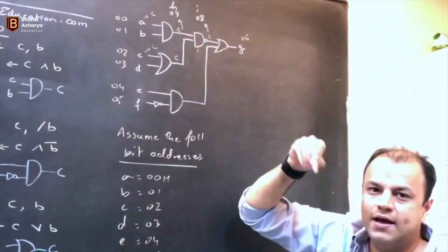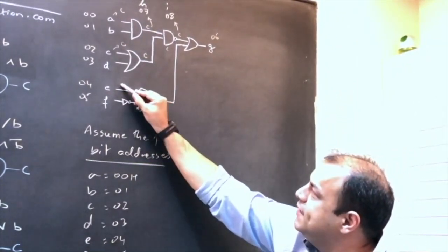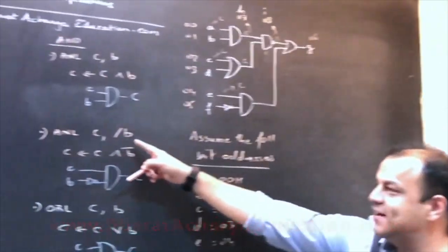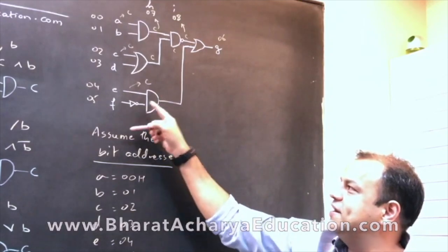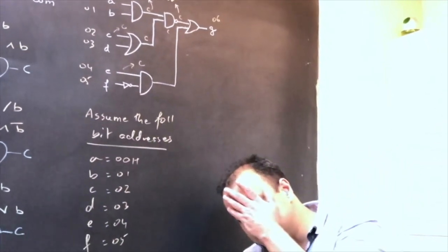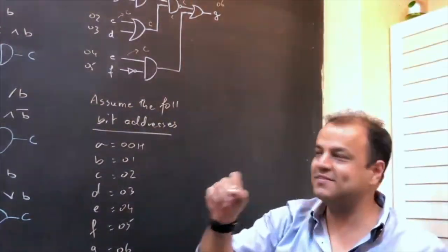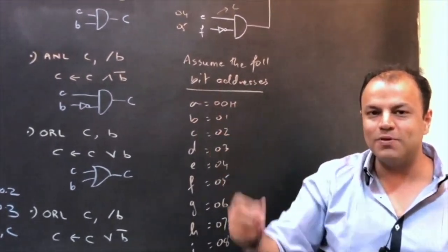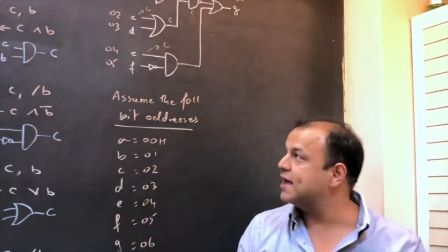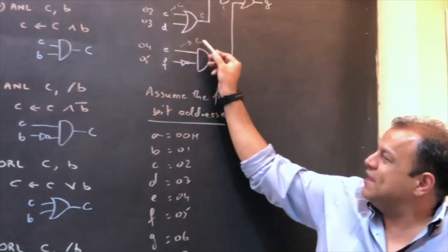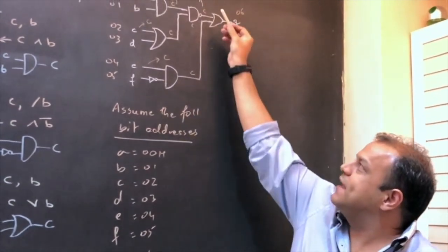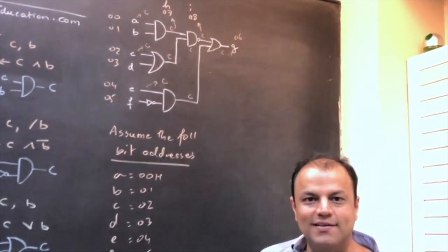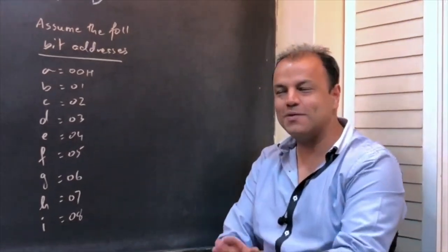So, take E into carry flag and AND it with the complement of F using ANL C, /F. If this doesn't strike you, you can also complement F first with CPL F, then AND — there are multiple ways. The answer comes in carry flag. Now OR that with I, and put the final answer in G. Let's write the full program together using the bit addresses from the board.